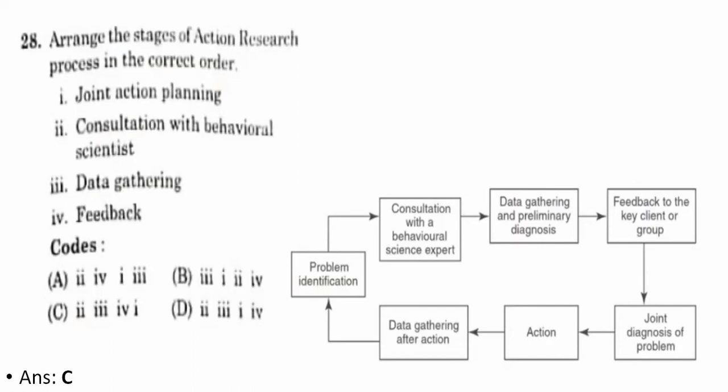Twenty-eighth question: arrange the stages of action research process in the correct order. The correct answer is C — starting with consultation with behavioral scientist, then data gathering, then feedback, then joint action planning. The process goes: problem identification, consultation with behavioral science expert, data gathering and preliminary diagnosis, feedback to the key client or group, joint diagnosis of the problem, action, then data gathering after action.